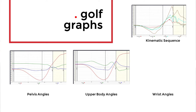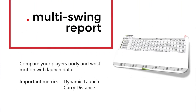The graphs — kinematic sequence, pelvis, upper body angles, and wrist angles — are all relevant. I have case studies at the end showing the differences between a distance wedge, a pitch shot, and a finesse or flop shot. The multi-swing report, if you're trying to compare to launch or carry, lets you correlate body to wrist quickly. In your multi-swing report you can filter by number of shots — do a before with 10 swings, an after with 10 more, and show top 10 versus bottom 10 to see how data changes in one easy-to-read table.